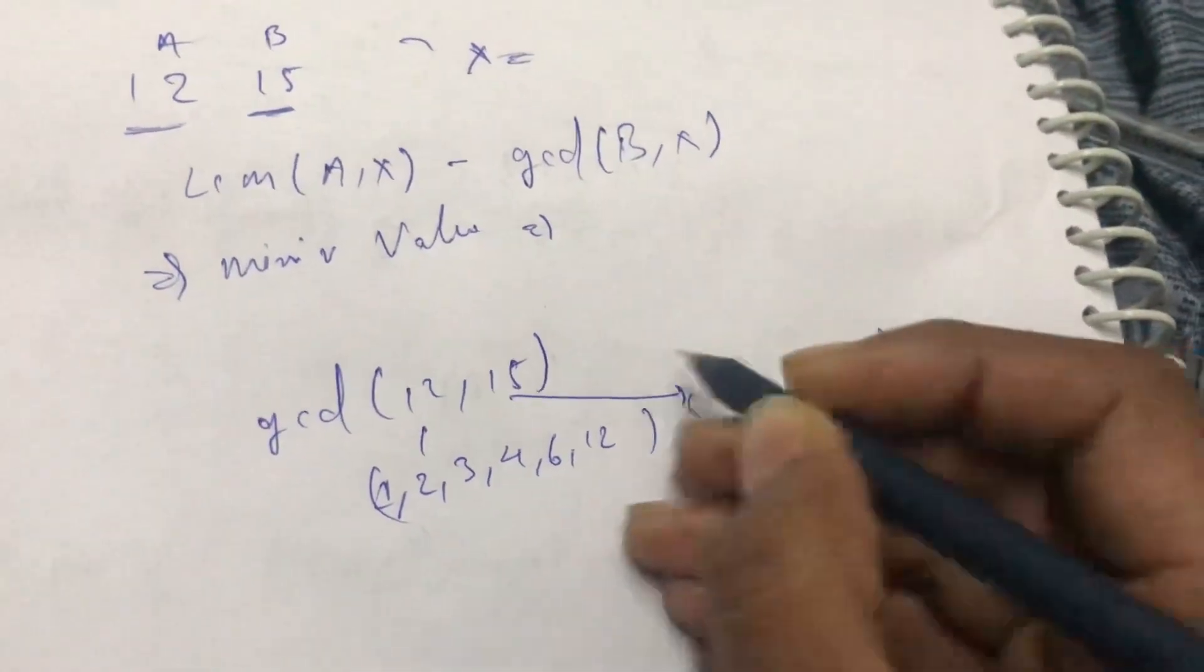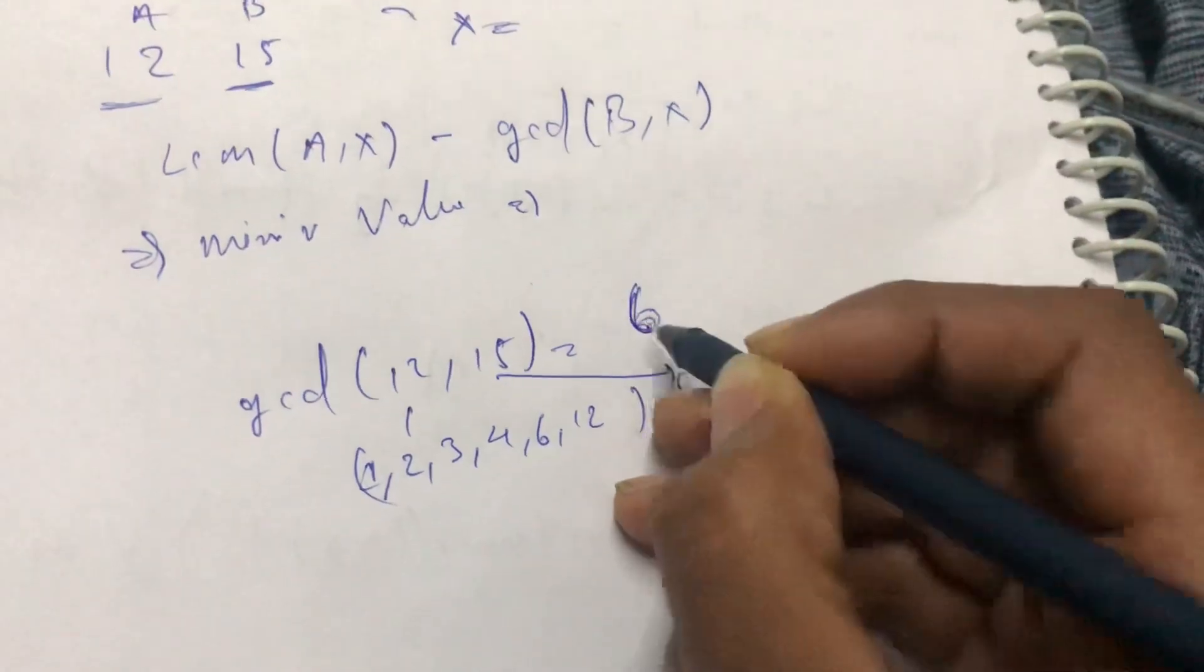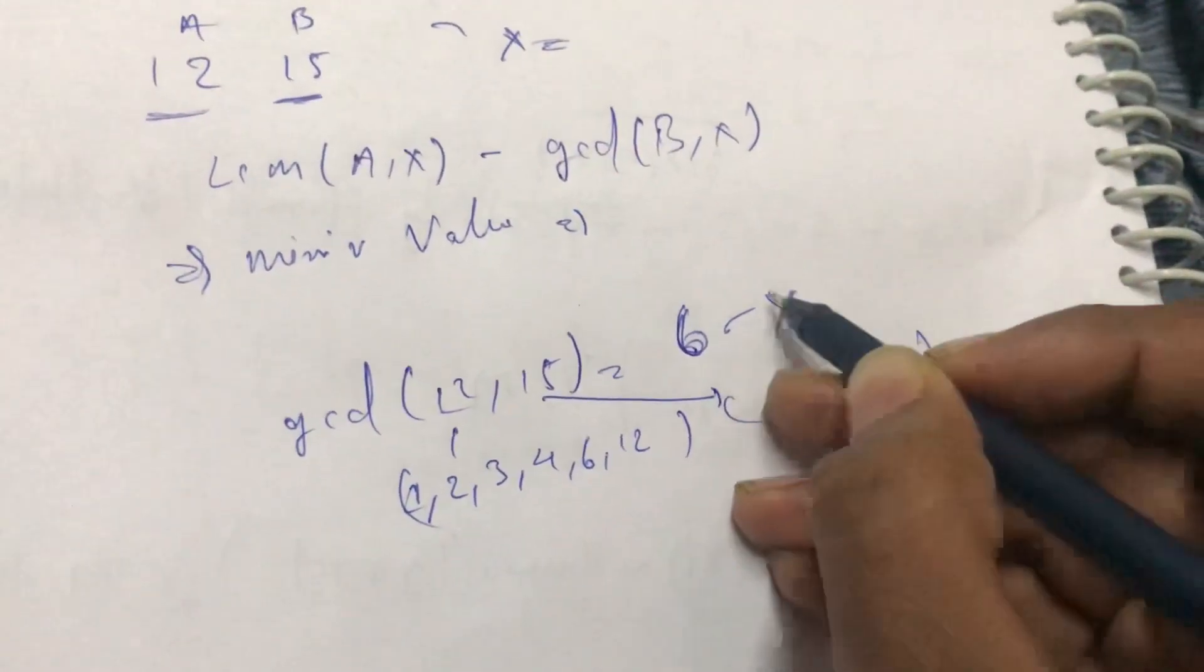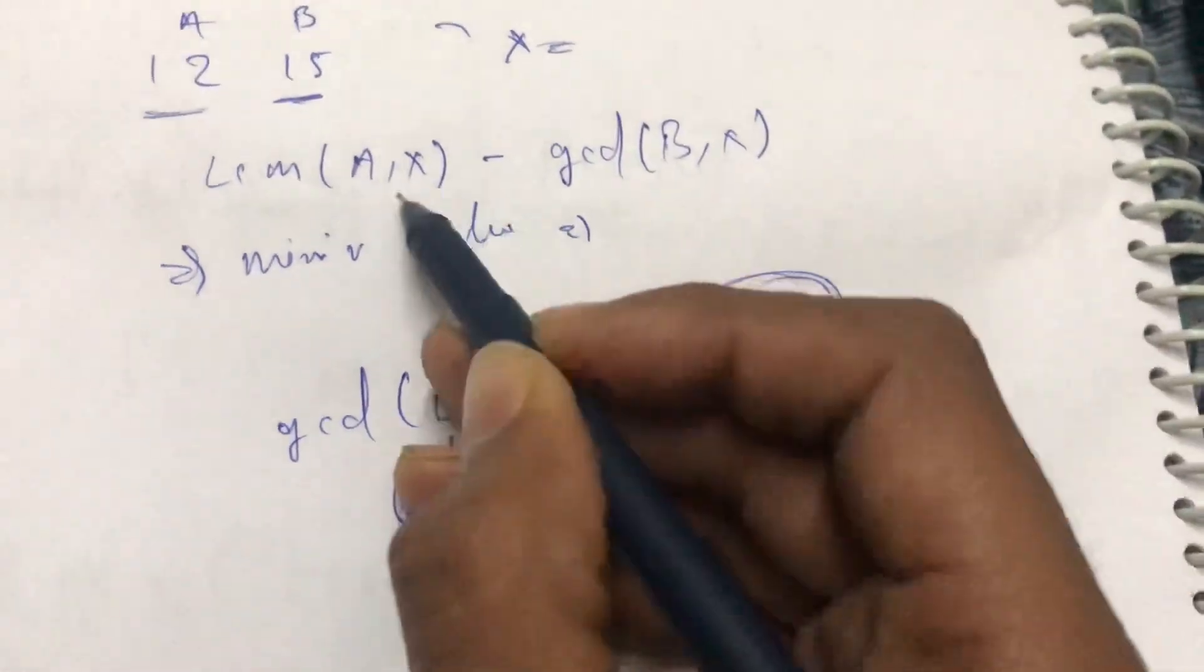In this we're going to be getting 6 as a GCD. Now 6 can act as an X, then we can put this X value into this and we can get our answer.